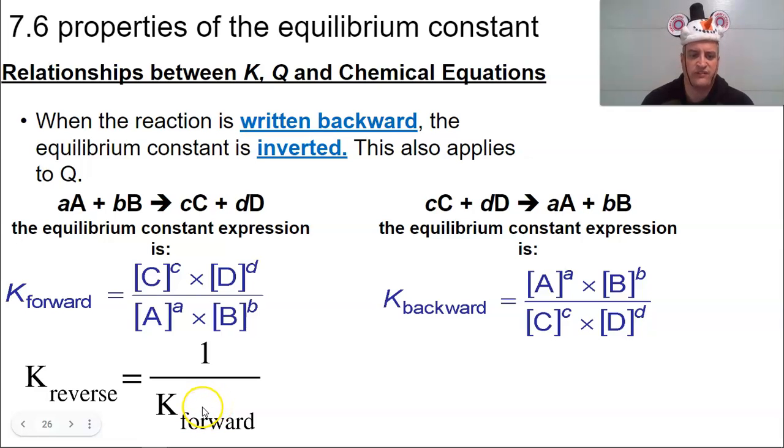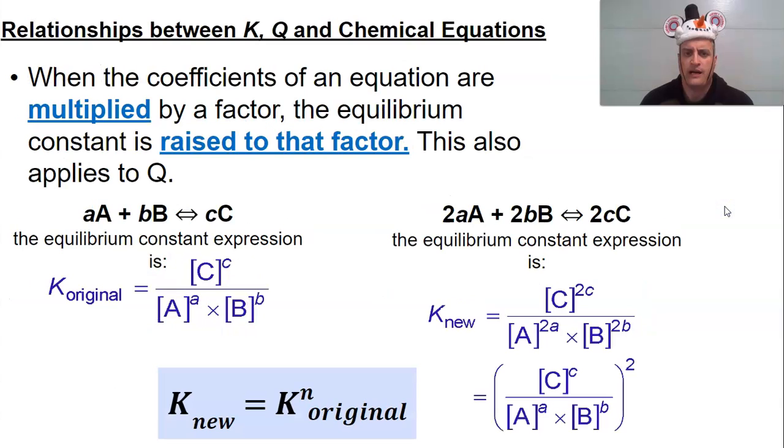So if this was 50, that means the reverse reaction would be 1 over 50, which makes sense that if the forward reaction is favored, the higher number, then the reverse reaction would be unfavored at a lower number.